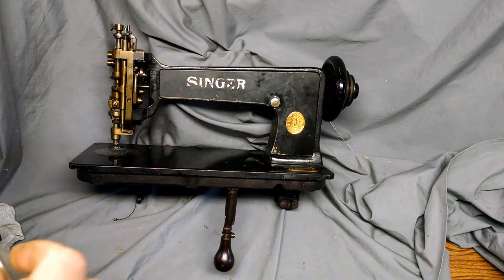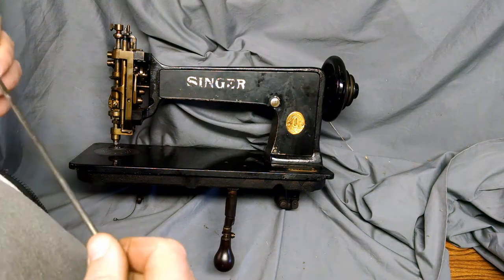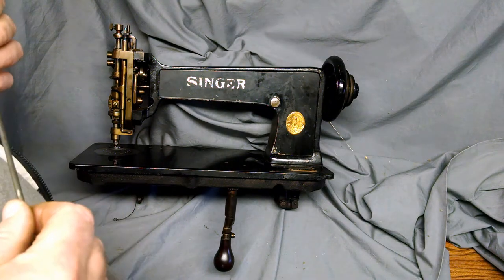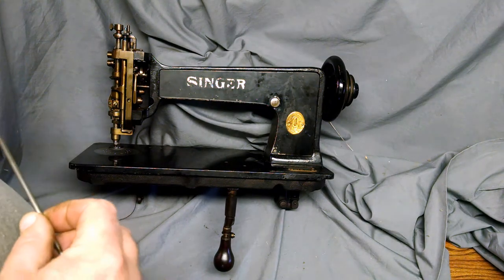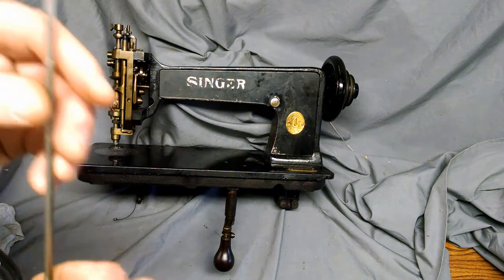This video is to show you how to set the needle and thread a Singer commercial embroidery machine model 114W103.